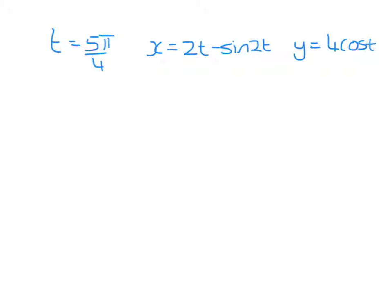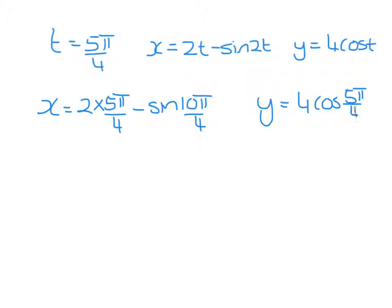Bringing together all parts, we have x equals 2 times 5 pi over 4 minus the sine of 10 pi over 4, and y is 4 cos 5 pi over 4.